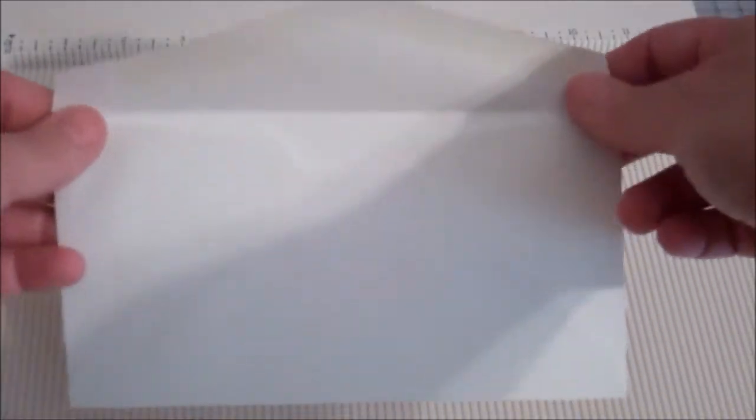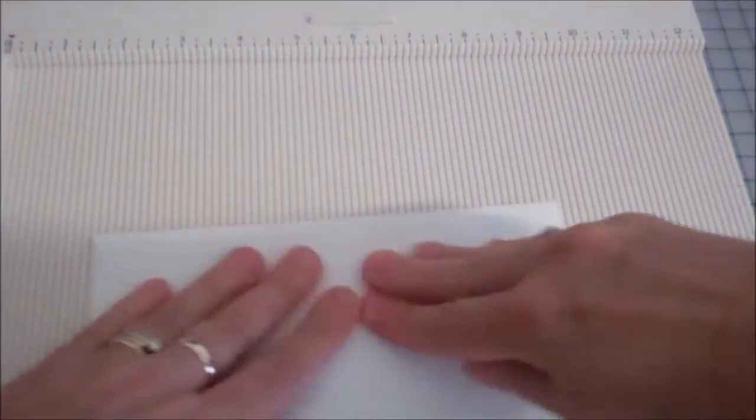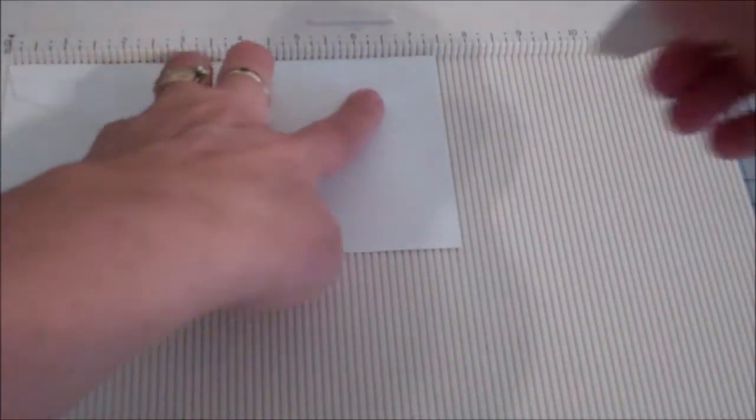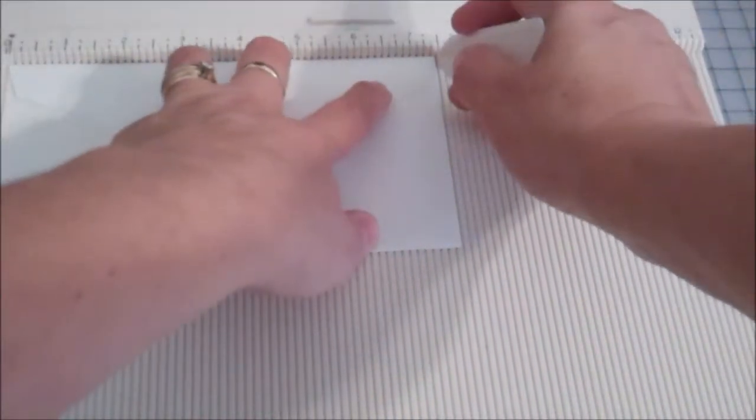So first of all you're going to take any size envelope, pretty much will do, and you're going to seal the top, the flap, and then you're going to score about a half an inch or so.